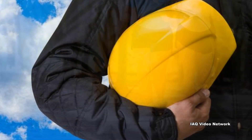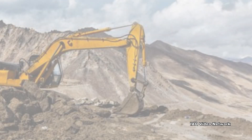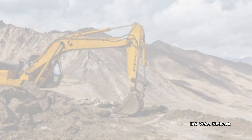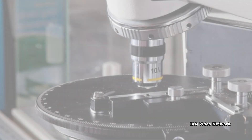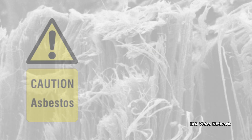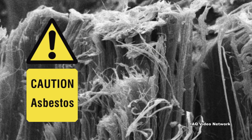Workers can also be exposed to naturally occurring asbestos during activities such as construction that disturb the ground. Fortunately, environmental testing can determine if asbestos is present, and there are management approaches to help mitigate these types of exposure risks.